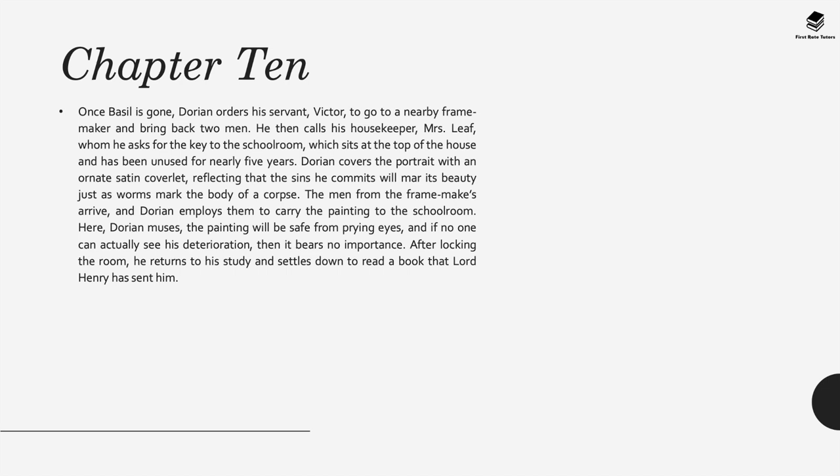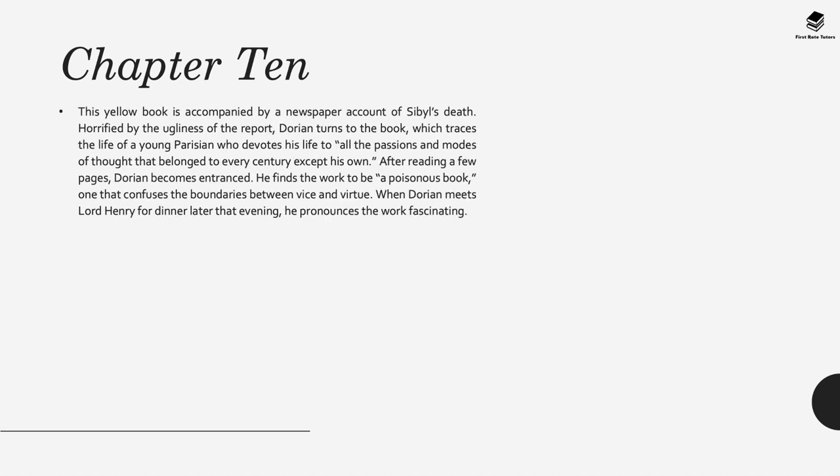In chapter ten, once Basil is gone, Dorian orders his servant Victor to go to a nearby frame maker and bring back two men. He then calls his housekeeper Mrs Leaf and asks for a key to an unused schoolroom at the top of the house. Dorian covers the portrait with an ornate satin coverlet and when the two frame makers arrive, they help him take it upstairs where he hides it. Dorian then locks the painting in the room and returns to his study to read a book that Lord Henry has sent him. This book is described as a yellow book, and it's accompanied by a newspaper account of Sybil's death. Horrified by the ugliness of the report, Dorian turns to the book, which traces the life of a young Parisian who devotes his life to, as the novel says, 'all the passions and modes of thought that belonged to every century except his own.' After reading a few pages, Dorian is entranced and finds the work to be a poisonous book—one that confuses the boundaries between vice and virtue. When Dorian later meets Henry for dinner, he pronounces that the work is fascinating.